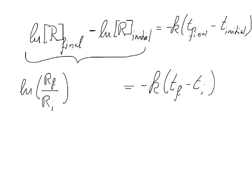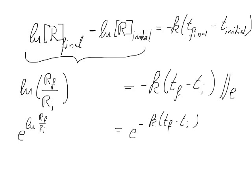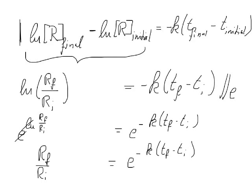And if we want to get rid of the ln, all we need to do is exponentiate both sides. We get e to the power of ln(R_final / R_initial) equals e to the power of minus k times (T_final minus T_initial). Since e and ln cancel each other out as inverse operations, we get R_final over R_initial equals e to the power of minus k(T_final minus T_initial). All three forms of the equation are absolutely equivalent to each other.